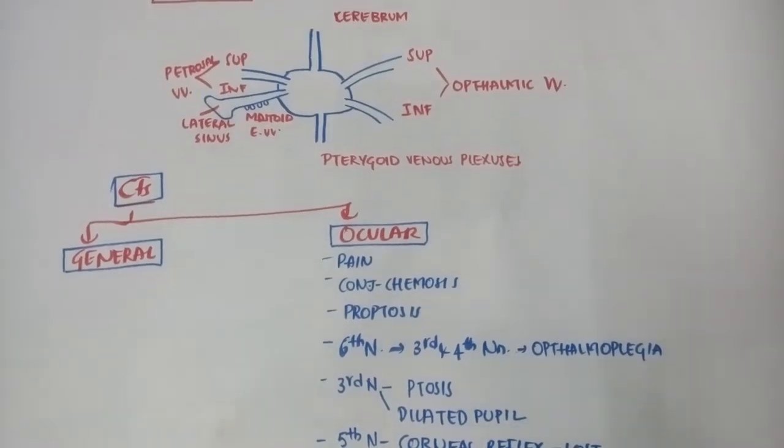Cavernous sinus thrombosis: the communications and sources of infection. Superiorly, it communicates with the cerebrum, so infection may spread from meningitis or cerebral abscess.